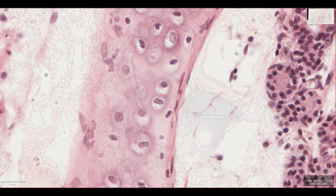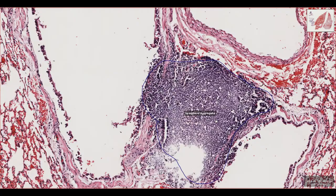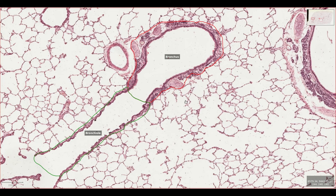Quite often there'll be lymphoid aggregates around the bronchi, like you can see in this image from a squirrel's lung. These are normal and part of the resident immune system. So if this is a bronchus, what's a bronchiole? Back in the section of cat lung there's a lovely field where we can see the transition from tertiary bronchus to bronchiole.